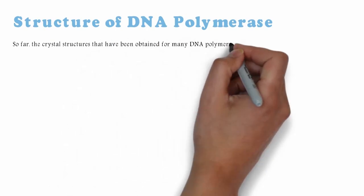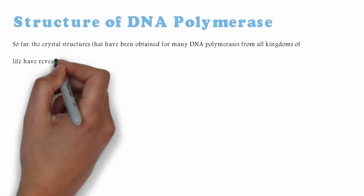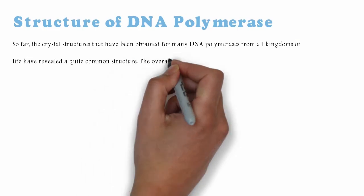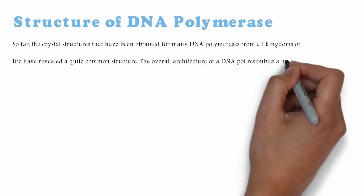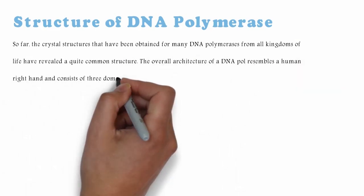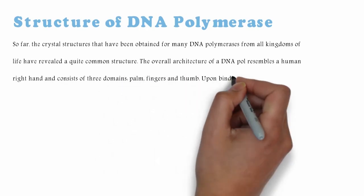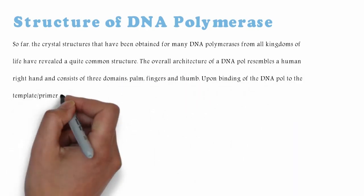Structure of DNA polymerase: So far, the crystal structures that have been obtained for many DNA polymerases from all kingdoms of life have revealed a quite common structure. The overall architecture of a DNA pole resembles a human right hand and consists of three domains: palm, fingers, and thumb.